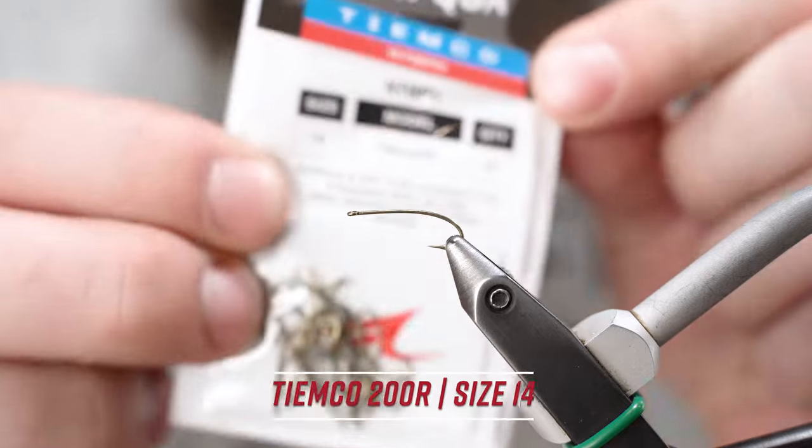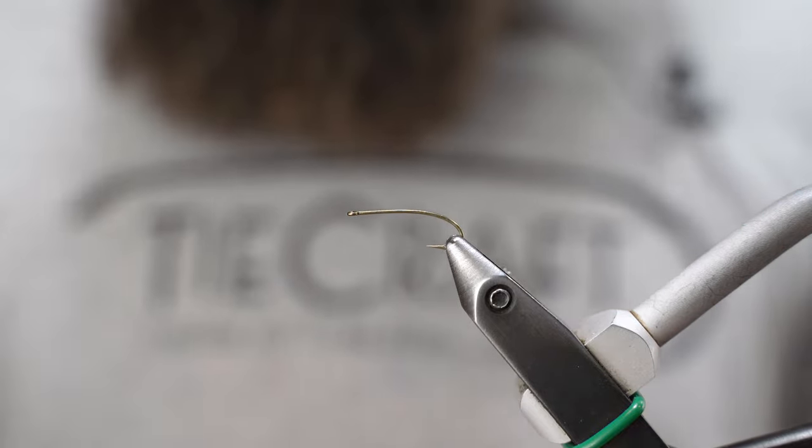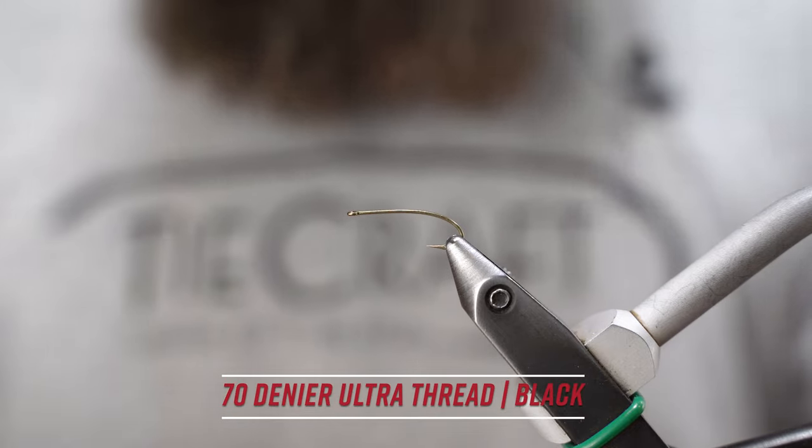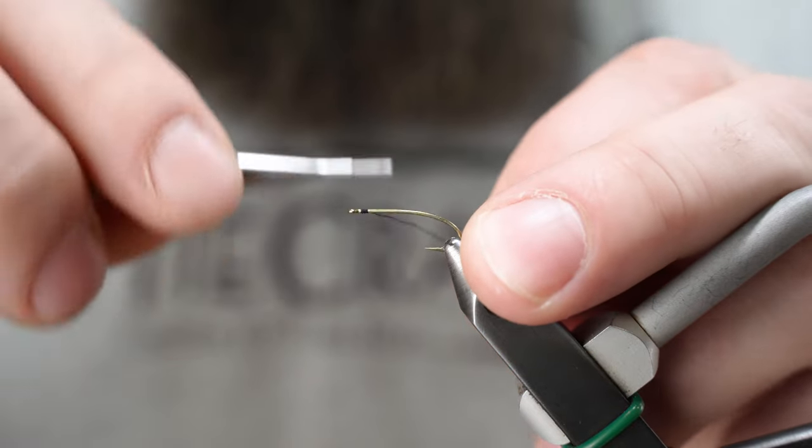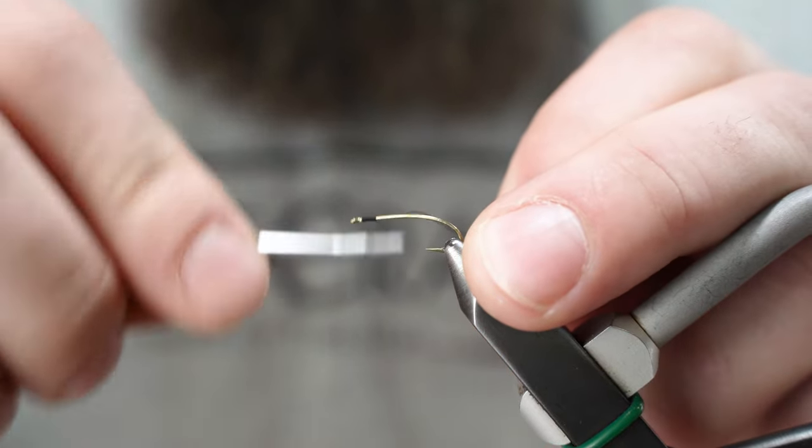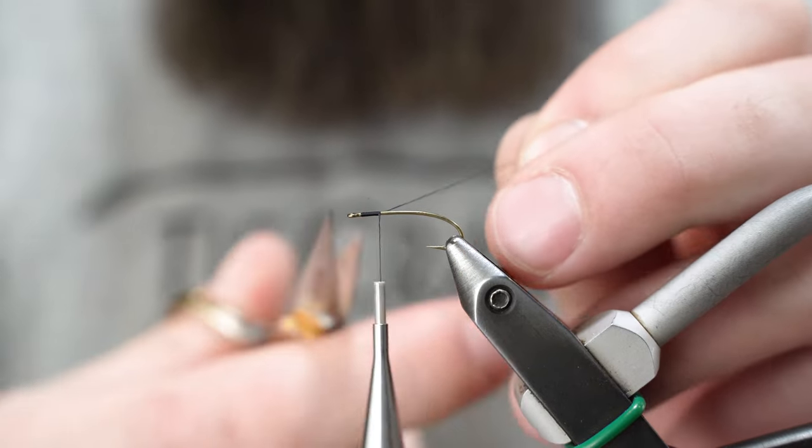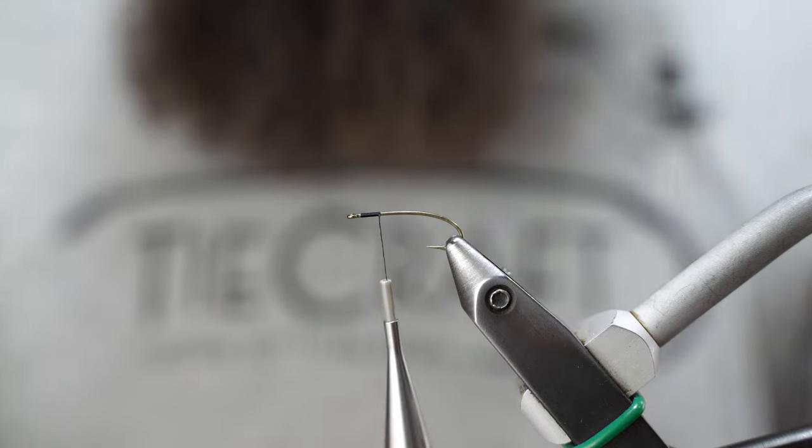We're starting with a Tiemco 200R size 14 and UTC 70 in black. Let's get our thread started on this particular pattern. The thread is only used for the head of the fly.